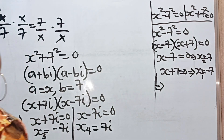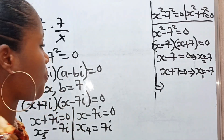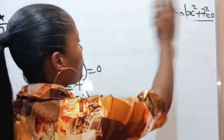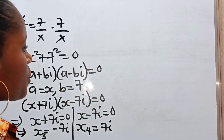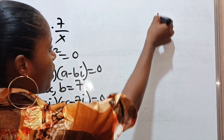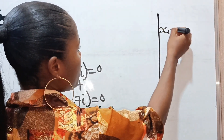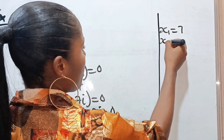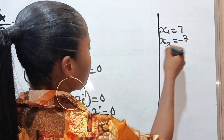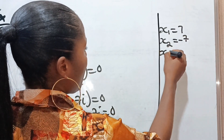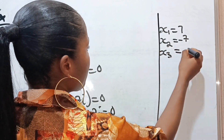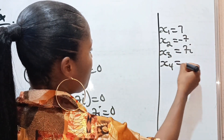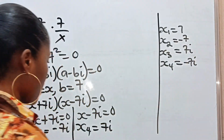Now let us prove that the answers we got are correct. The four values of x are: x1 is 7, x2 is minus 7, x3 is 7i, and x4 is minus 7i.